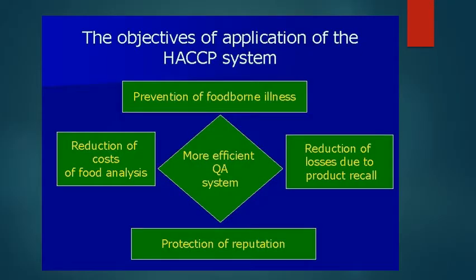Though I have mentioned this in an earlier lecture, here again are the objectives of the HACCP system: prevention of foodborne illness, reduction of costs of food analysis, reduction of issues due to product recall, a more efficient quality assurance system, and protection of reputation. These are briefly the objectives of applying the HACCP system.